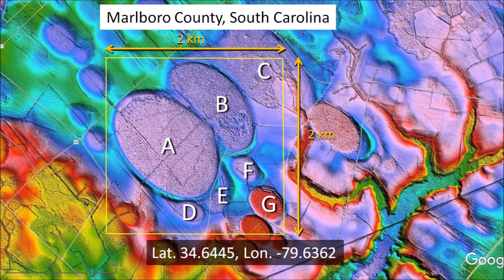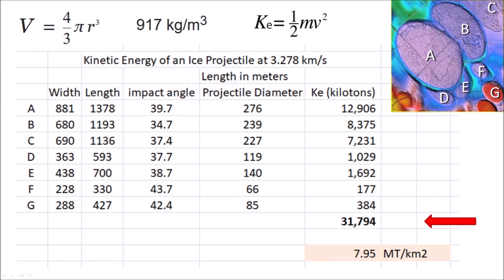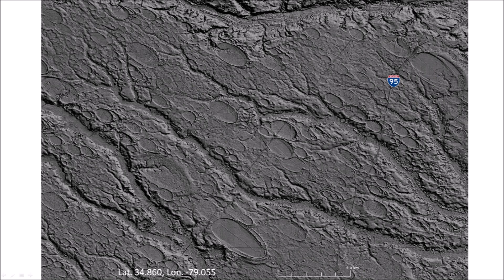I previously calculated the energy required to make the Carolina Bays in a 4 square kilometer area in Marlborough County, South Carolina. The total energy adds up to 31,794 kilotons or 31.8 megatons of TNT — yielding 7.95 megatons per square kilometer. With this tremendous bombardment, all the megafauna like the mammals, short-faced bears, giant armadillos, and all the forest plants would have been ground into a paste. A LiDAR image of Carolina Bays 25 kilometers southwest of Fayetteville, North Carolina shows the entire image covered with bays — an extinction-level saturation bombardment from which there was no escape.